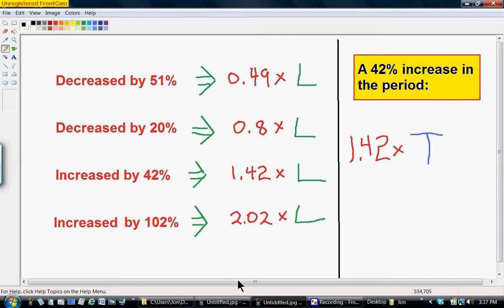So this is the thing that can easily be confusing when you're quickly working through these problems is that 1 times L would be just 100 percent of L. So to have a percent increase of 102 percent, you're going to add 1.02 to the factor of 1, which is 2.02. Now also they told us in the problem that there was a 42 percent increase in the period, so we would write that as 1.42 times T.